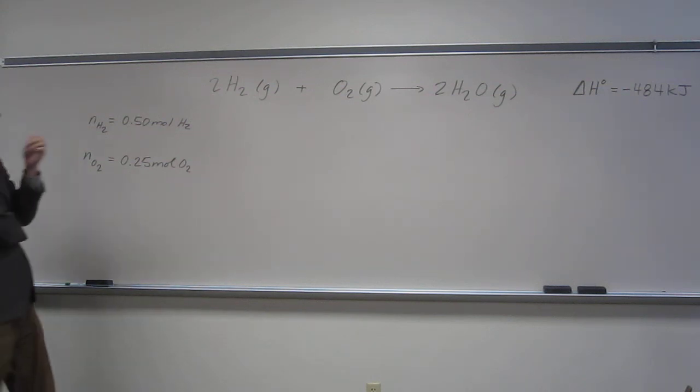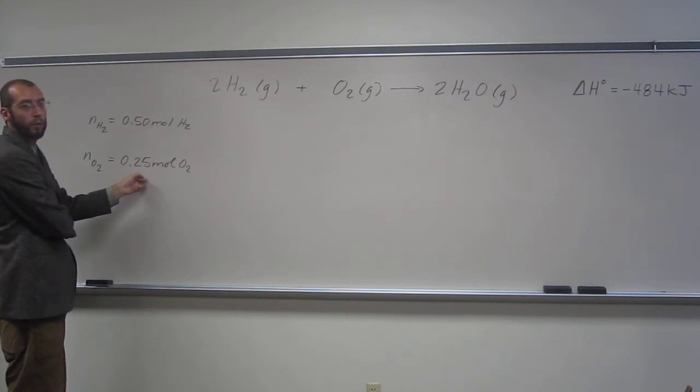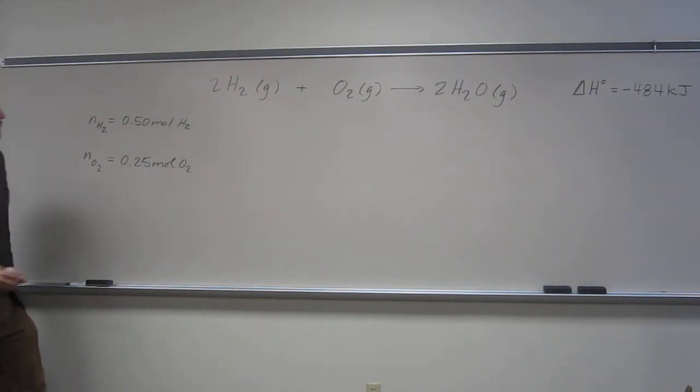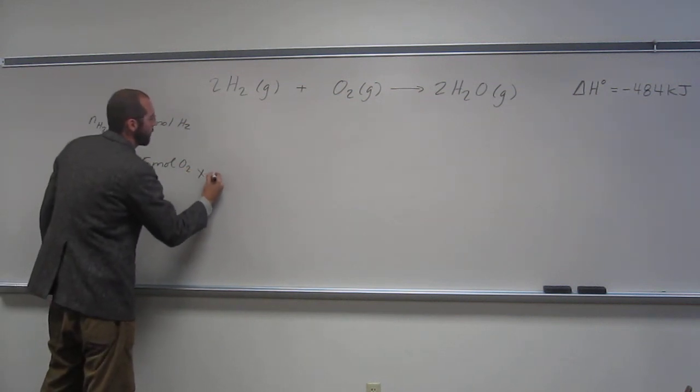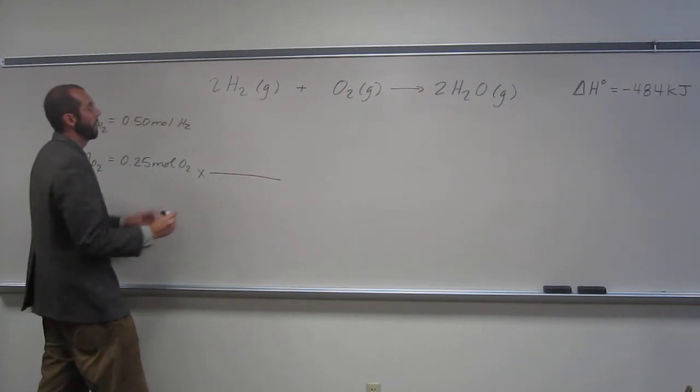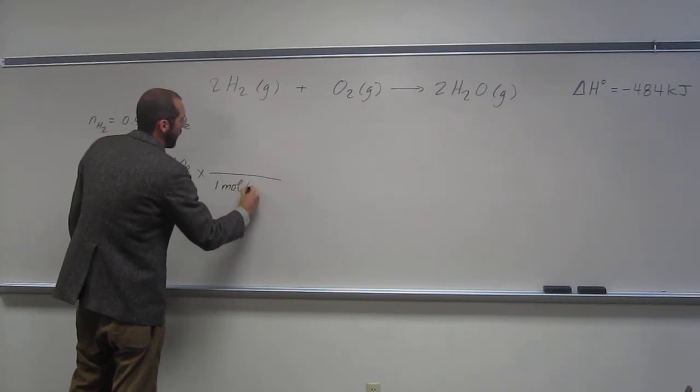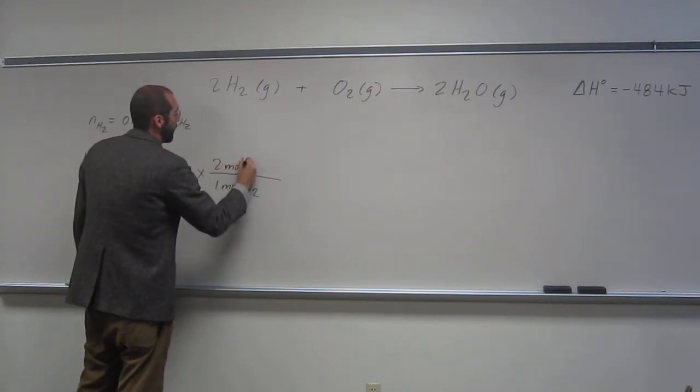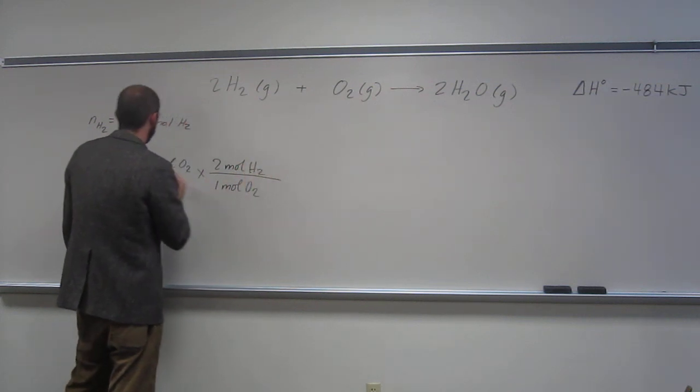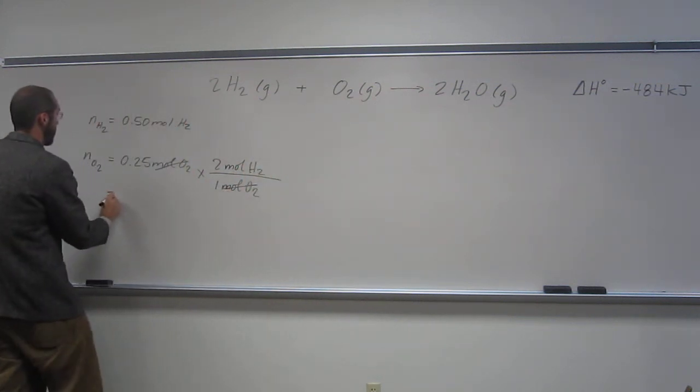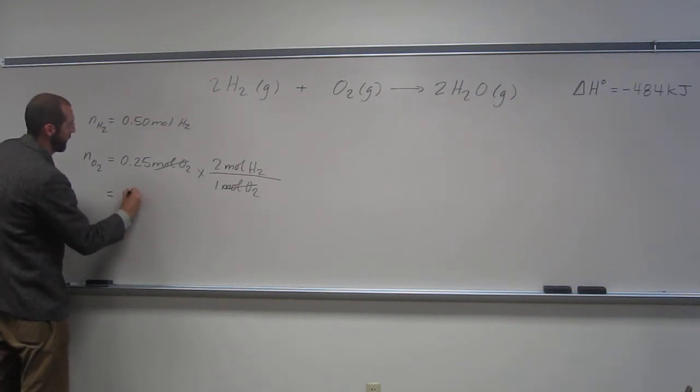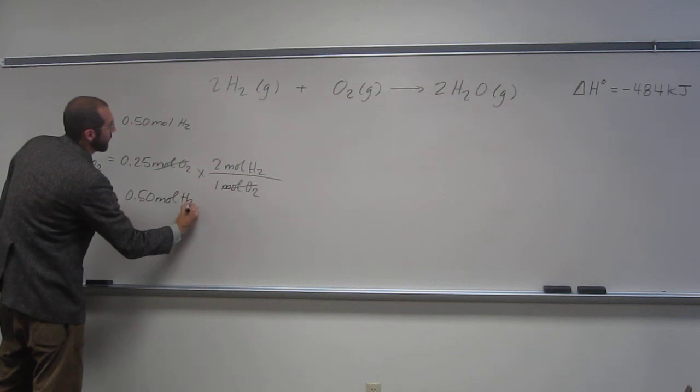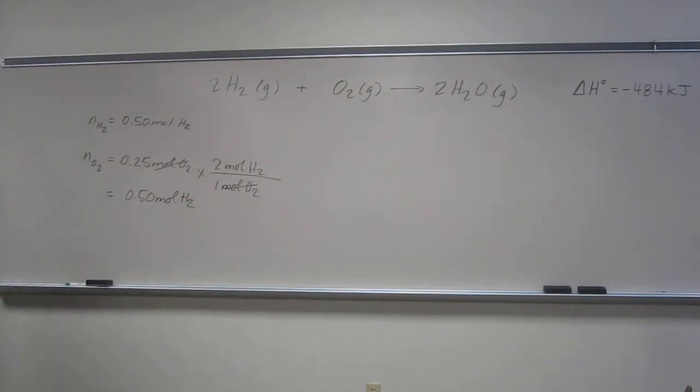So it says there's 0.5 moles of H2, 0.25 moles of O2. So let's figure it out. How do we figure it out? Well, we just multiply like this. So for every one mole of O2, we should look for two moles of H2. So cancel, cancel, cancel. So that equals 0.50 moles of H2. So in this case, there's no limiting reagent.